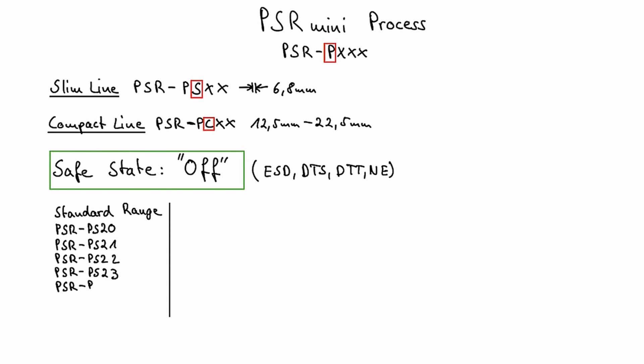At first we have the standard range. These are just 24 volt inputs. Then we have the wide range input modules. They have an input of up to 250 volts. And last but not least, we have relays with device internal locking.